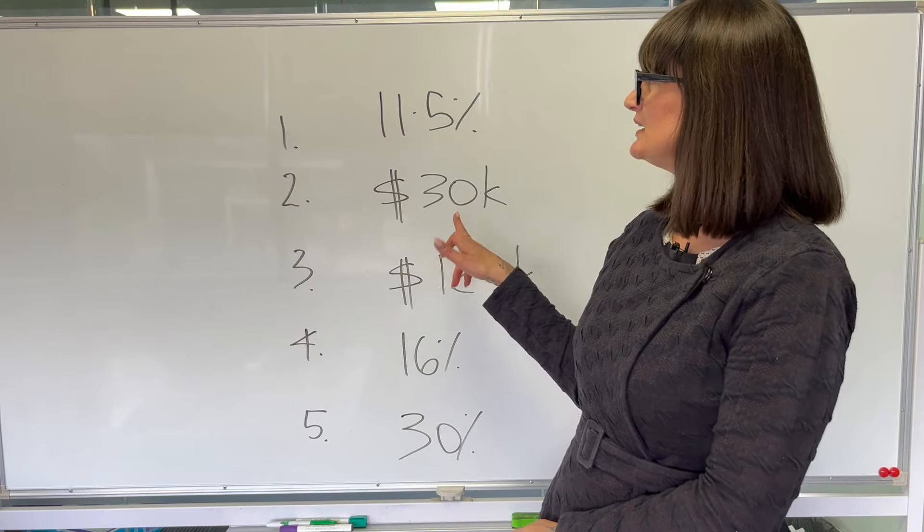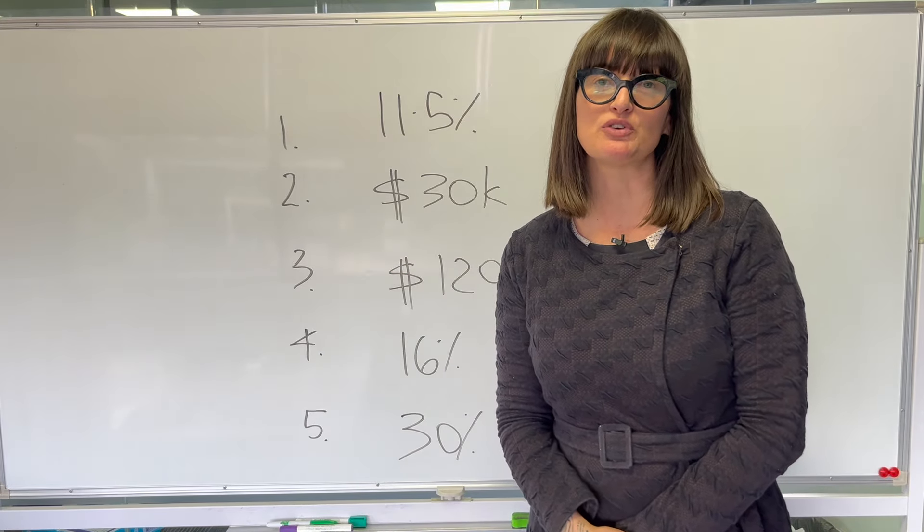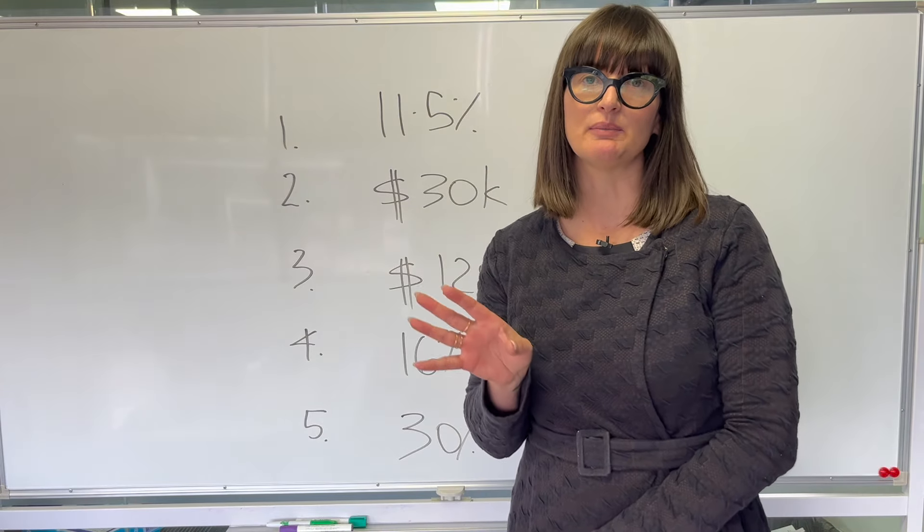Another number you need to think about is $30,000. So $30,000 is what the concessional super contribution cap is now. It was $27,500, it's now been increased to $30,000.